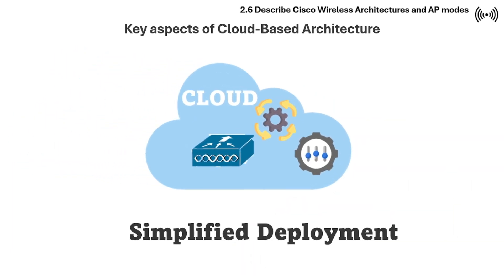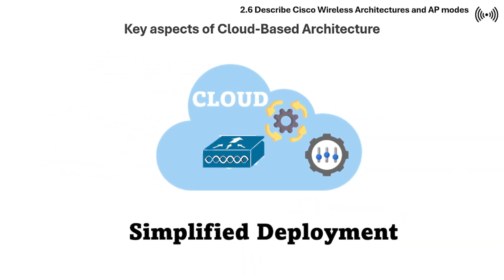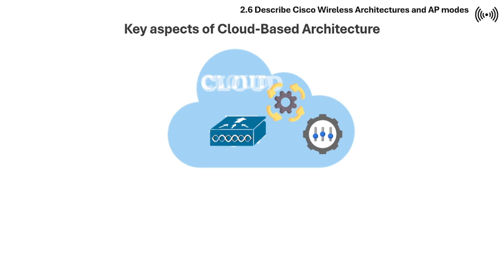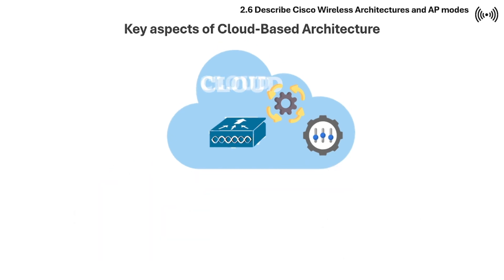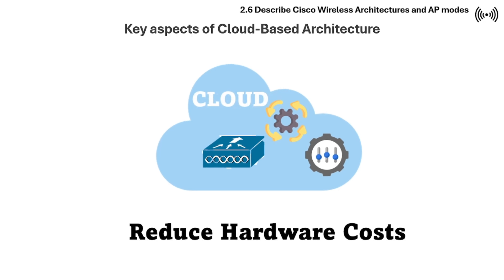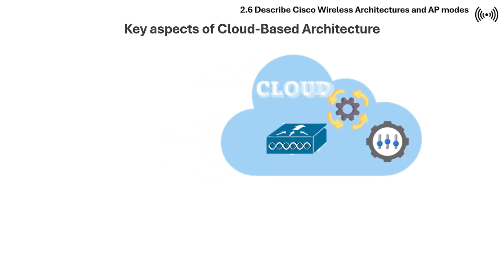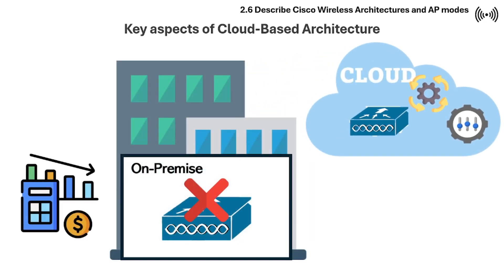Next is simplified deployment. Cloud-based solutions often offer zero-touch provisioning where APs automatically connect to the cloud and self-configure, making deployments easier and faster. Next is reduced hardware cost — organizations don't need to purchase and maintain physical controllers at each location, reducing upfront cost and ongoing maintenance.